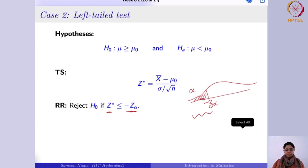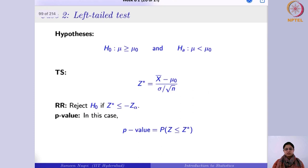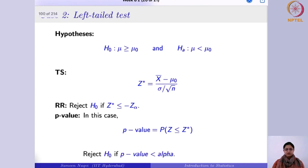In the p-value approach for the left-tailed test, the p-value is the probability that Z ≤ z* (extreme on the left side also). You reject the null hypothesis if this p-value is less than alpha. For left or right tailed tests, whatever tail you have aligns with your alternative hypothesis.